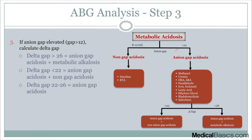If we do have an elevated anion gap, the next thing is to calculate a delta gap. The delta gap tells us: is there something else going on to explain the acidosis beyond just the anion gap acidosis? If it's low, there's going to be an additional non-anion gap acidosis. If it's high, there's going to be an additional metabolic alkalosis on top of the anion gap acidosis. If it's normal — roughly 22 to 26 — then the only thing going on is the anion gap acidosis.